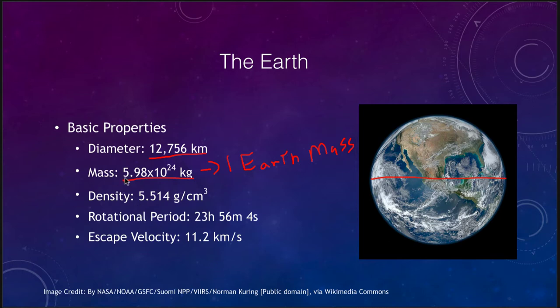This would be 6 times 10 to the 24th, would be a 6 followed by 24 zeros. That amount of material is just simply beyond our comprehension. So we compare them relative to Earth masses.